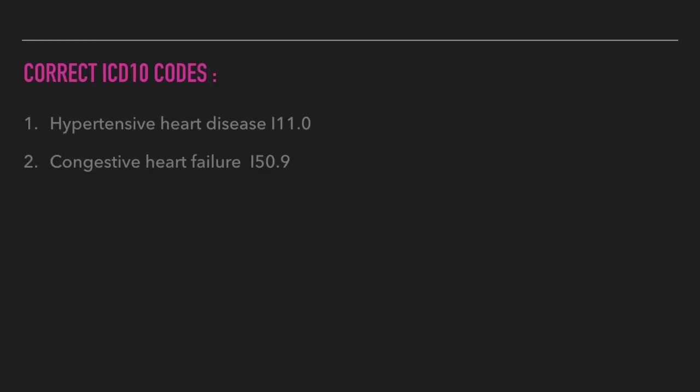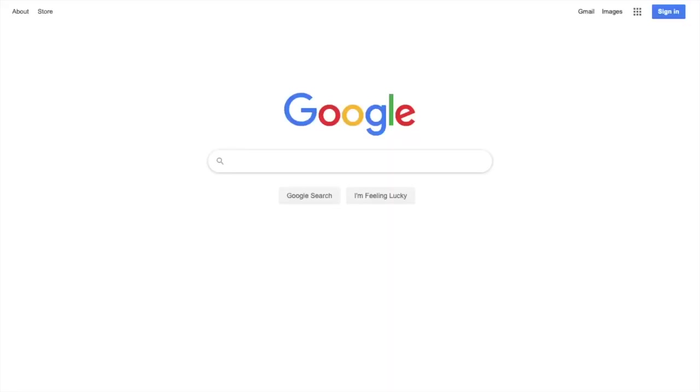The correct way to code this is hypertensive heart disease I-11.0 as the primary — the hypertension code moves up to primary — and then the congestive heart failure code I-50.9 is listed second. ICD-10 tells us this, and I'm going to show you that. We're going to go out to Google and type in ICD-10 guidelines.